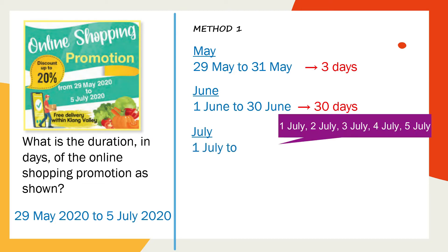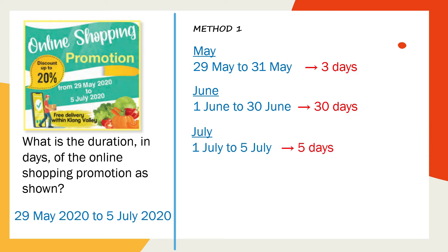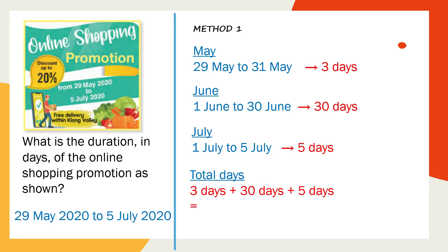Then from 1st July to 5th July we have 5 days. When you total up the number of days — 3 days plus 30 days plus 5 days — we will have 38 days.